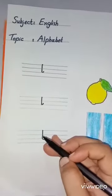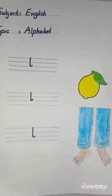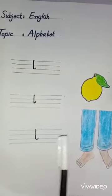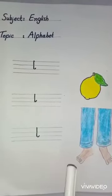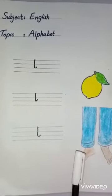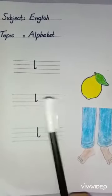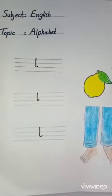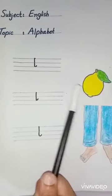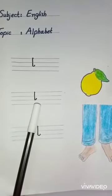This is alphabet L. L for legs. L for legs — we use legs for jumping, walking, and running. Now repeat with me: L for lemon, L for lemon, L for legs.